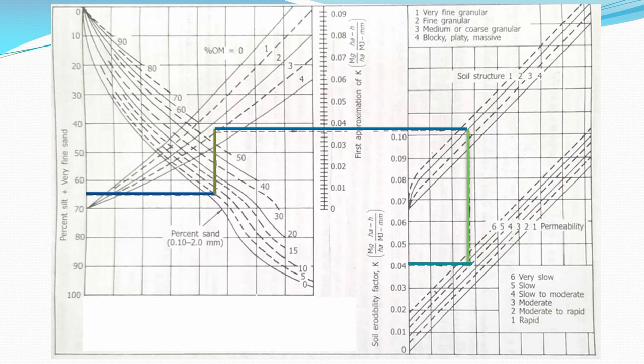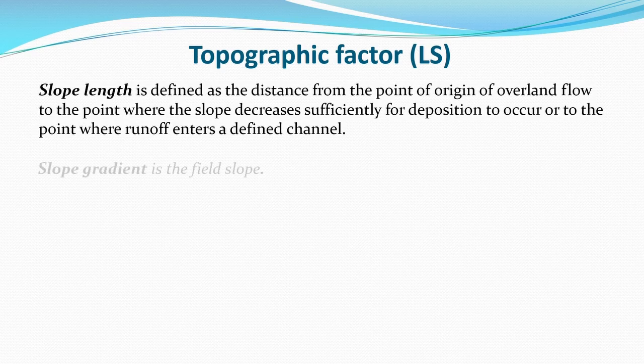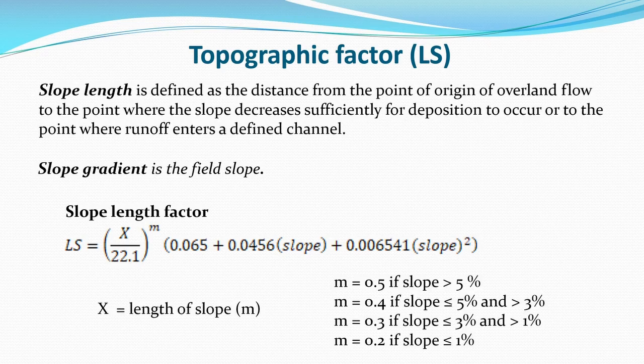The Topographic Factor is the combination of L (slope length) and S (slope steepness). Slope length is defined as the distance from the point of origin of overland flow to the point where the slope decreases sufficiently for deposition to occur, or to the point where runoff enters a defined channel.